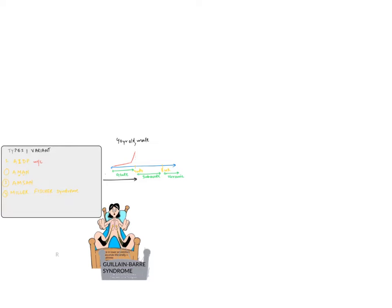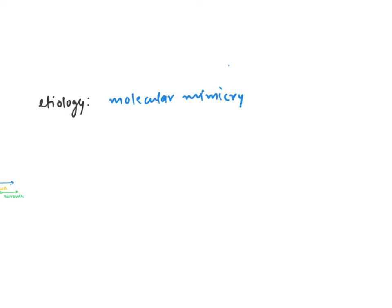Now we talk about etiology. The main concept that explains the etiology is molecular mimicry. First, there is a prior antecedent infection in the body, and this infection produces antibodies that cross-react with myelin. Why myelin? Because myelin has ganglioside, which reacts with the antibody.